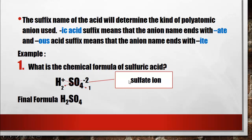Example one: what is the chemical formula of sulfuric acid? It contains the element sulfur and ends with '-ic acid.' Therefore, the polyatomic anion consists of sulfur and oxygen, and the ion name ends with '-ate.' The sulfate ion has the formula SO4-2. We combine this ion with hydrogen, writing the positive hydrogen ion first, positive 1, followed by the sulfate ion SO4-2.